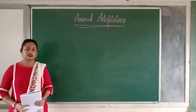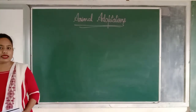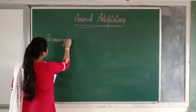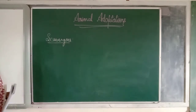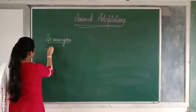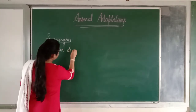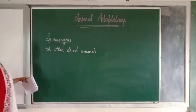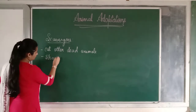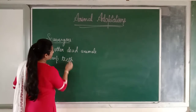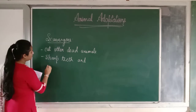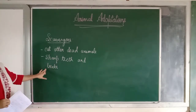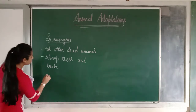What are scavengers? Scavengers are the animals that eat other dead animals. They have got sharp teeth and birds have got sharp beaks that help them to tear the flesh.